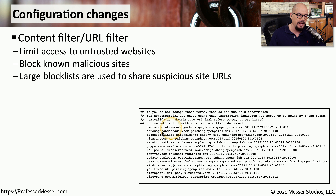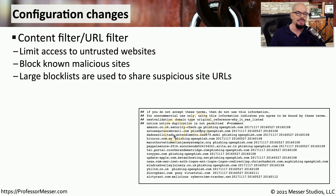For example, the first entry on this particular block list is amazon.co.uk, which sounds fine — except it's actually amazon.co.uk.security-check.ga. This is clearly a URL trying to disguise what it's doing, and you can see in the block list it has been configured as a phishing site.